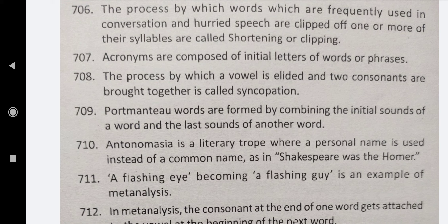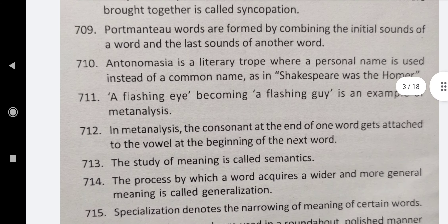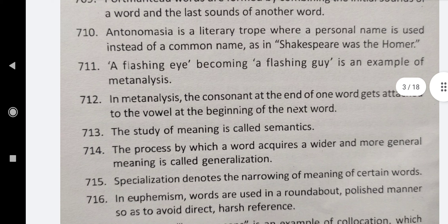Antonomasia is a literary trope where a personal name is used instead of a common name, as in 'Shakespeare was the Homer.' 'A flashing eye' becoming 'a flashing guy' is an example of metanalysis. In metanalysis, the consonant at the end of one word gets attached to the vowel at the beginning of the next word.